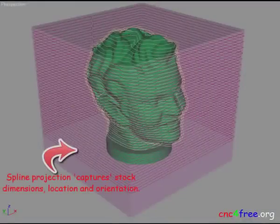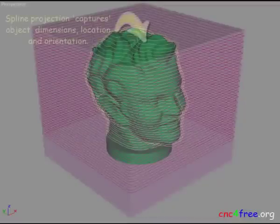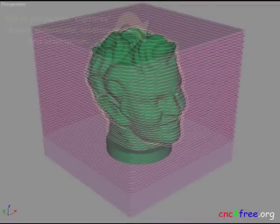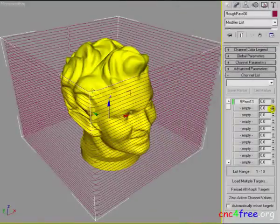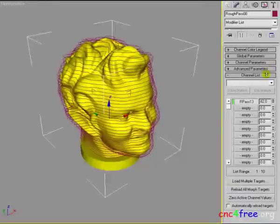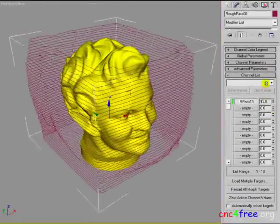To create roughing passes, two splines are created. One defines the uncut stock and the other defines the last roughing pass. GMAX spline morphing provides fast interactive means to view and capture intermediate roughing passes.